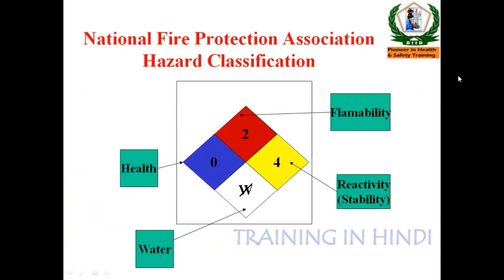This is the NFPA diamond, also called the placard. The placard is the NFPA diamond — National Fire Protection Association Hazard Classification. It is a diamond-shaped pictogram with four colors: red, yellow, blue, and white. Each color section represents a different type of hazard.